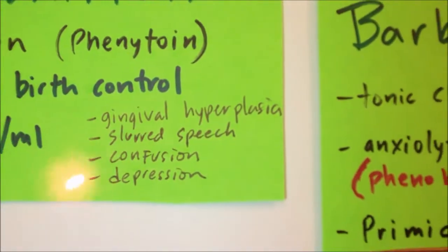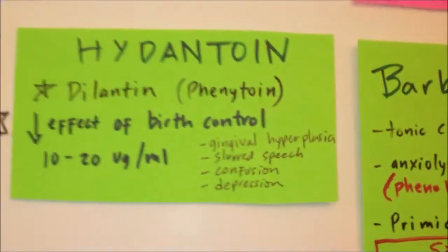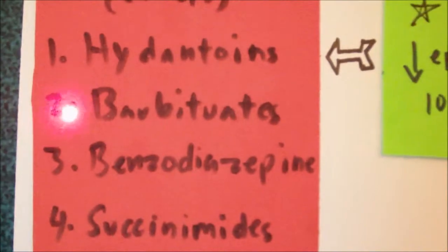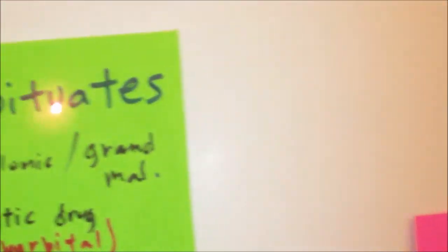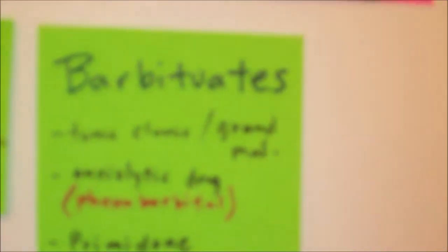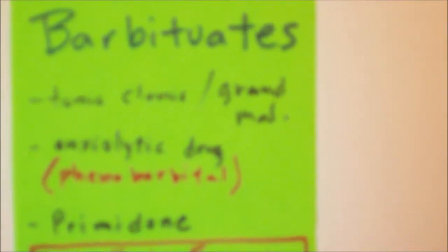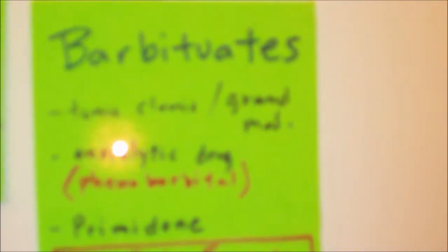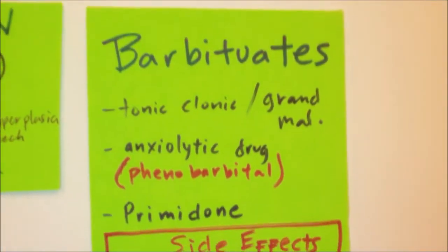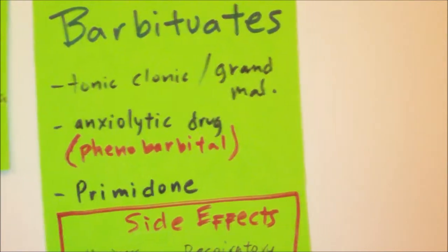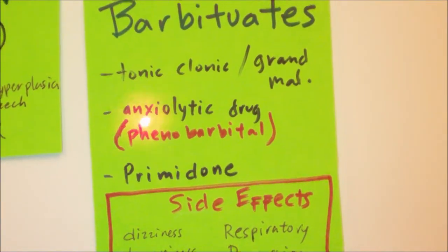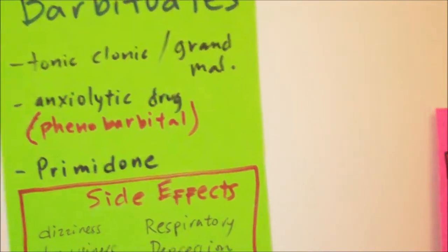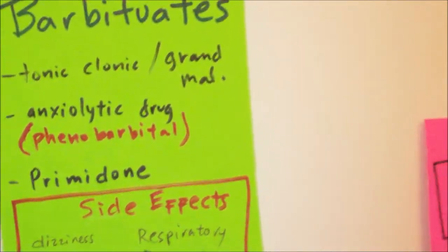Nausea, vomiting, and constipation are noted side effects. Now let's talk briefly about barbiturates. Barbiturates are used for tonic-clonic or grand mal seizures, but they are also used as an anxiolytic or depressant drug that can cause relaxation and sleepiness. They can also alter the level of consciousness in the patient, and since barbiturates are highly addictive, we have to watch out for overdose in patients.